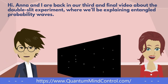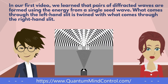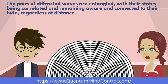Anna and I are back in our third and final video about the double-slit experiment, where we'll be explaining entangled probability waves. In our first video, we learned that pairs of diffracted waves are formed using the energy from a single seed wave. What comes through the left-hand slit is twinned with what comes through the right-hand slit. The pairs of diffracted waves are entangled, with their states being correlated and remaining aware and connected to their twin, regardless of distance.